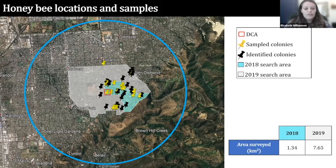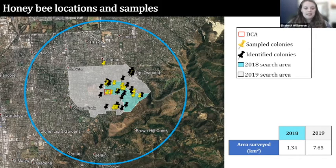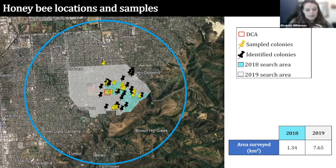The yellow pins on the map represent colonies that I sampled. In total I had 57 colonies across the two years.